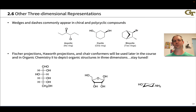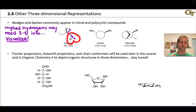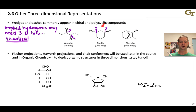It's quite common for wedges and dashes to appear in polycyclic and cyclic compounds, as well as chiral or handed compounds. Implied hydrogens may need three-dimensional information when you add them in, so it's important to properly visualize and think through the tetrahedral geometry. For example, in an acyclic structure we'd add an implied hydrogen on a dash right next to a wedged chlorine, creating the 'heart' shape. We do the same with other implied hydrogens — placing them on a wedge adjacent to an existing dash group.